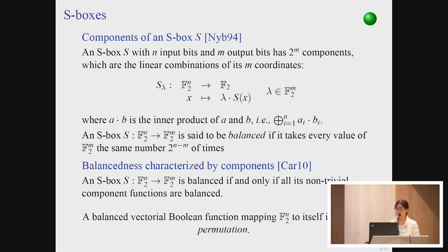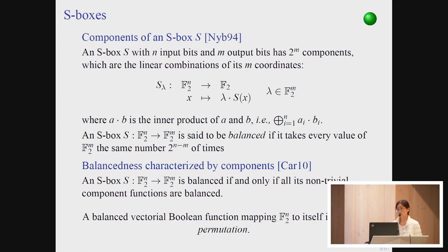The components are the linear combinations of the coordinates. We say an S-box is balanced if it takes every output value the same number of times. If all components are balanced Boolean functions, then the S-box is balanced. Balanced S-boxes mapping n-bit to n-bit are of particular interest — they are permutations.